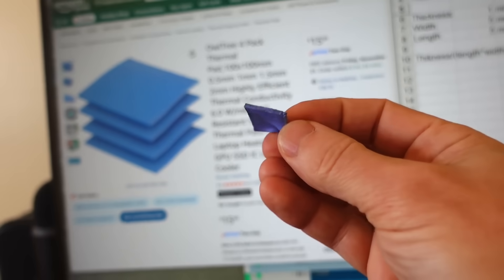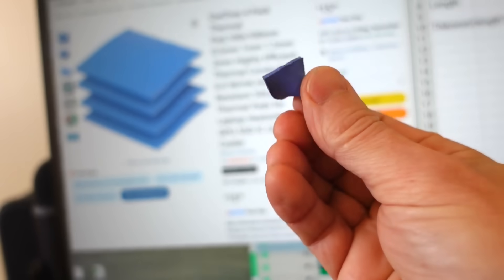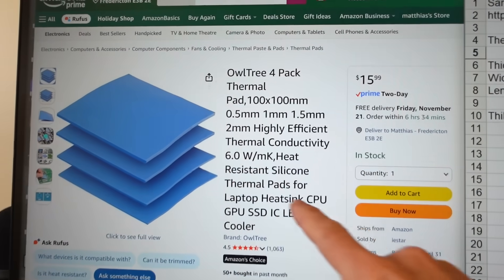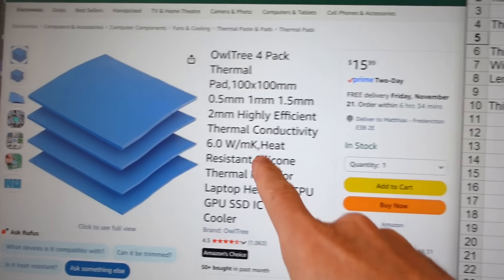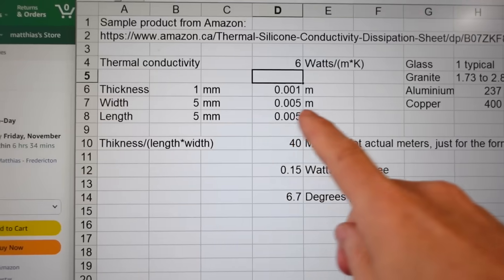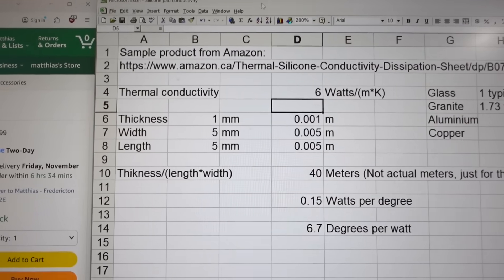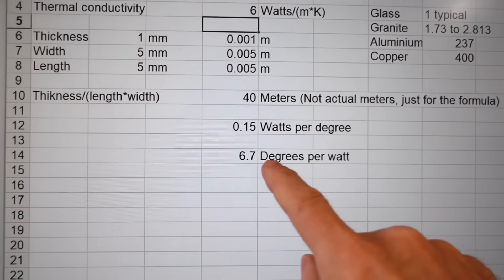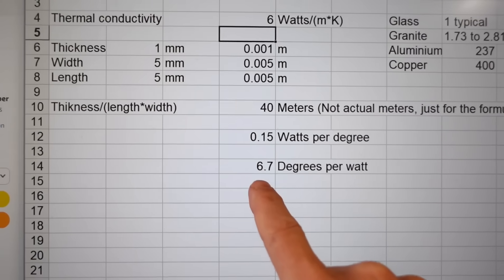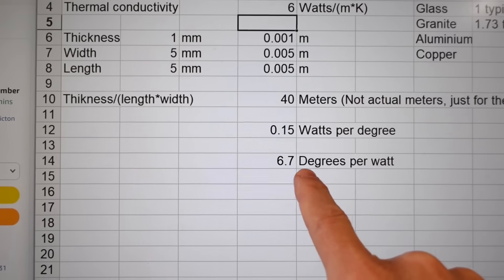I looked up thermal conductivity for gel pads like this and this one on Amazon is 6 watts per meter Kelvin and I worked that out if we have an effective area of 5 by 5 millimeter because the chip doesn't heat evenly and 1 watt from the chip which is probably fairly reasonable we get 6.7 degrees temperature difference. They're basically about 2.5% as conductive as aluminum so not great.